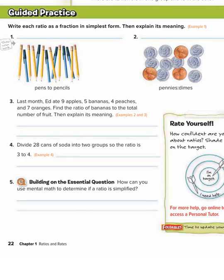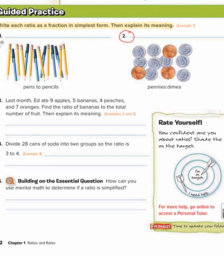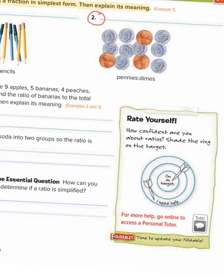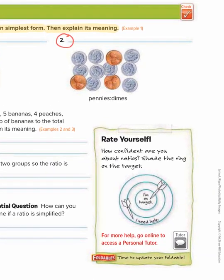Now we're on workbook page 22 and you guys are going to follow along in your book. We want to write each ratio as a fraction in simplest form, then explain its meaning. We're going to do number two together. This says write each ratio as a fraction in simplest form. It says pennies to dimes.